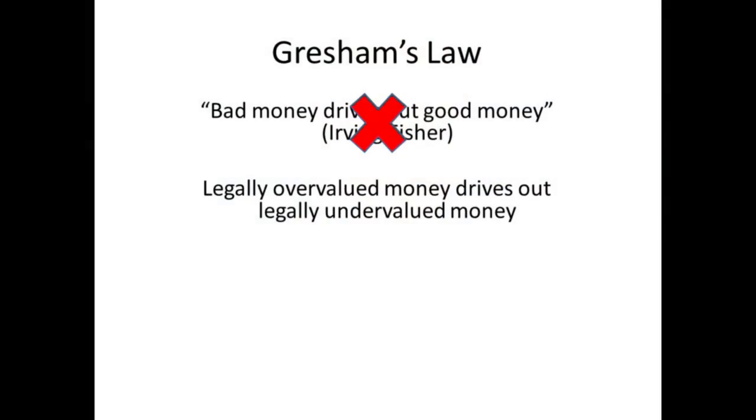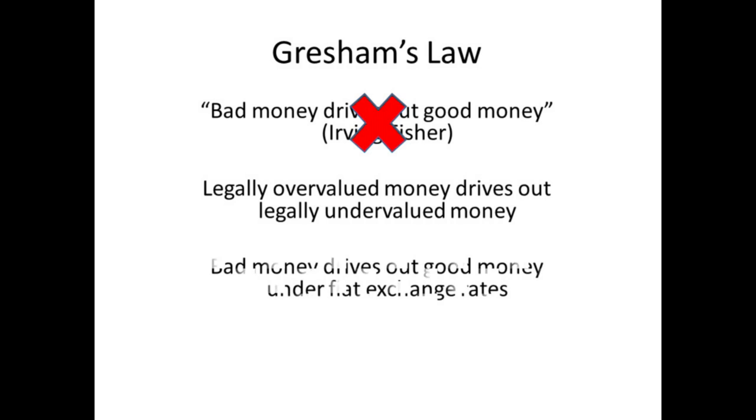The argument goes: if we permitted a free market in money, the bad product would always drive out the good product, so our friendly government takes charge, monopolizes money production, and therefore prevents bad money from driving out good money — so we have bad money from the outset. This formulation is wrong. What would be a correct formulation of Gresham's Law? It would be that legally overvalued money drives out legally undervalued money. Or in another formulation: bad money drives out good money under fiat exchange rates.